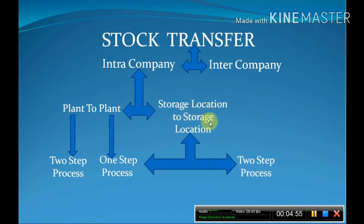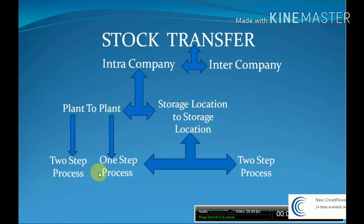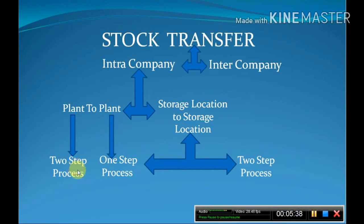In the two-step process for plant-to-plant transfer, similar to storage location to storage location transfer: in a single step, whether the receiving plant has actually received the material or not, the stock gets updated in the system. To avoid this, we follow the two-step process. For the two-step process within plant-to-plant transfer, we use T-code MB1B and movement type 303.